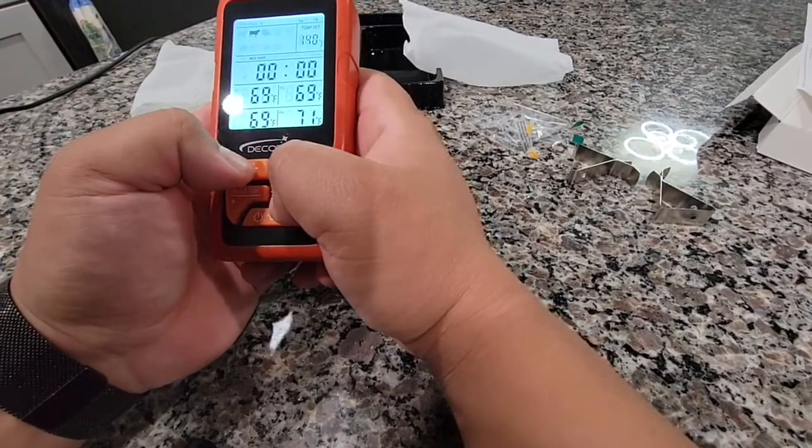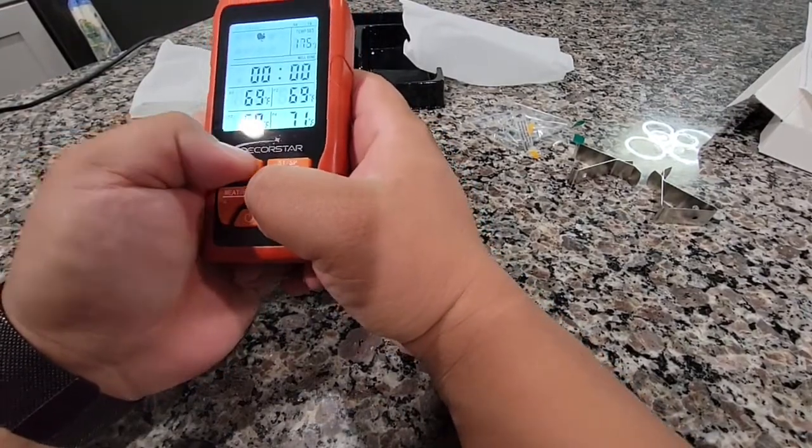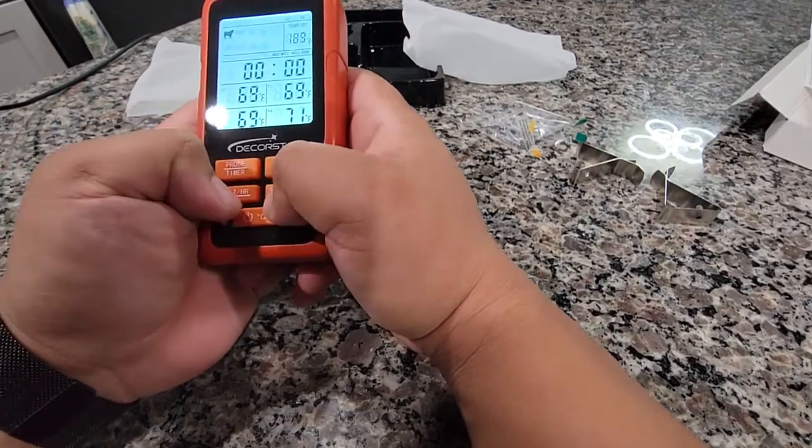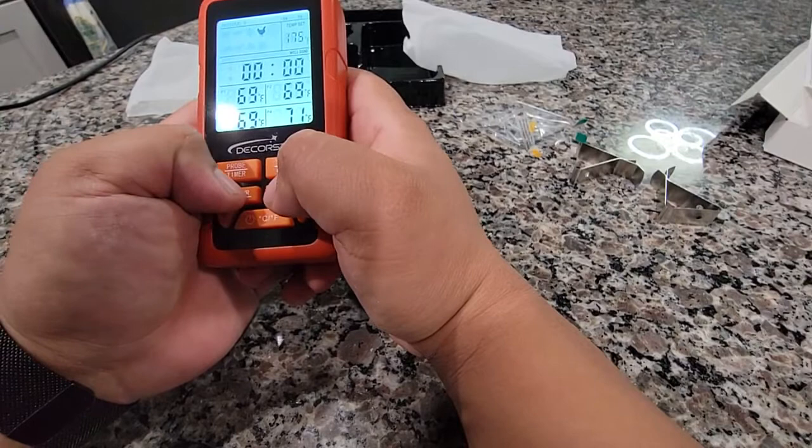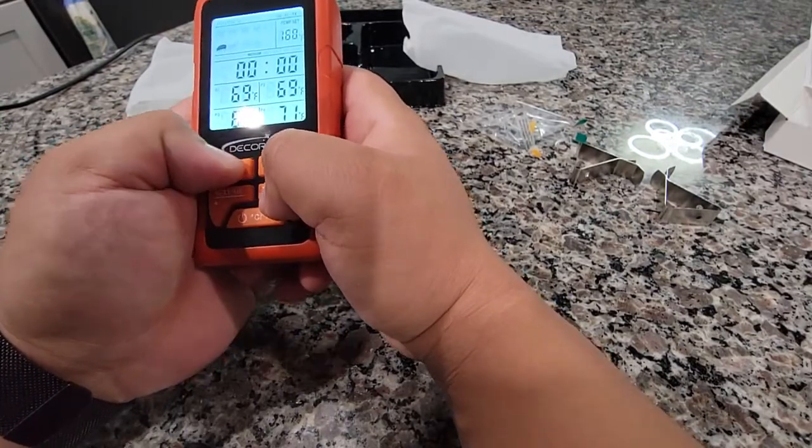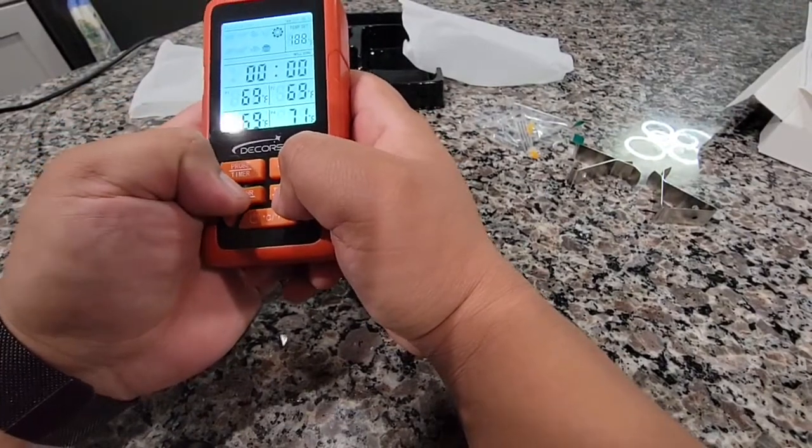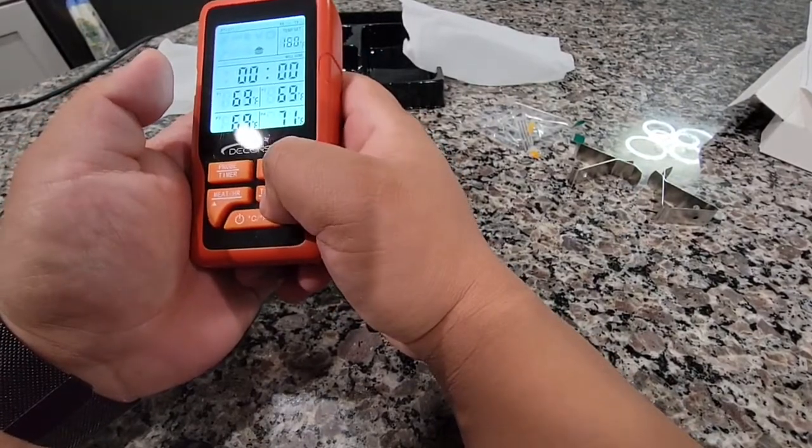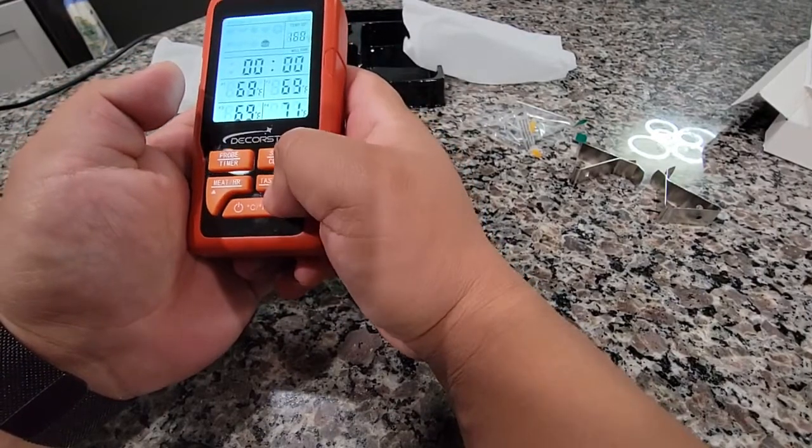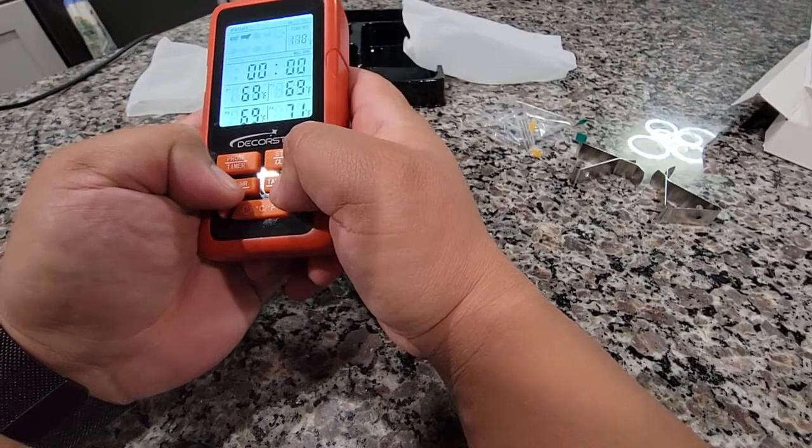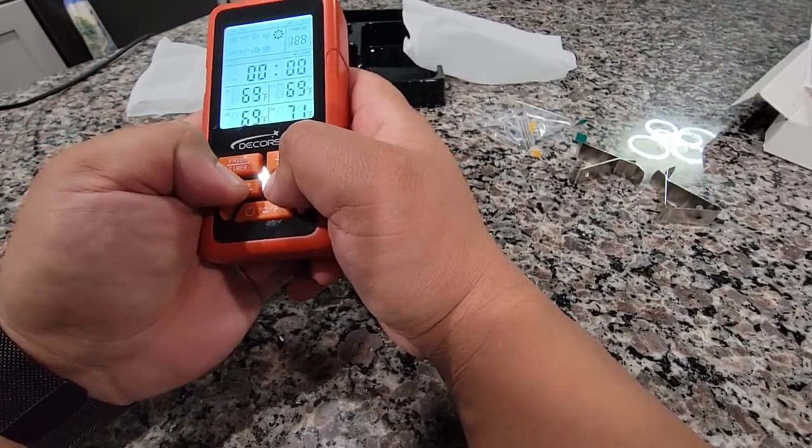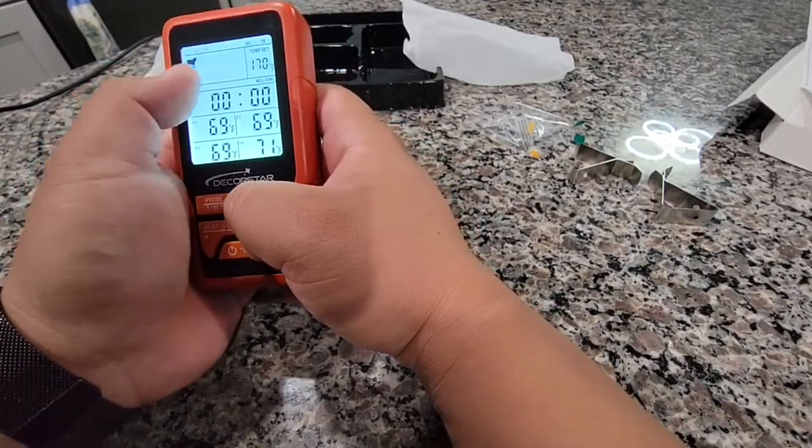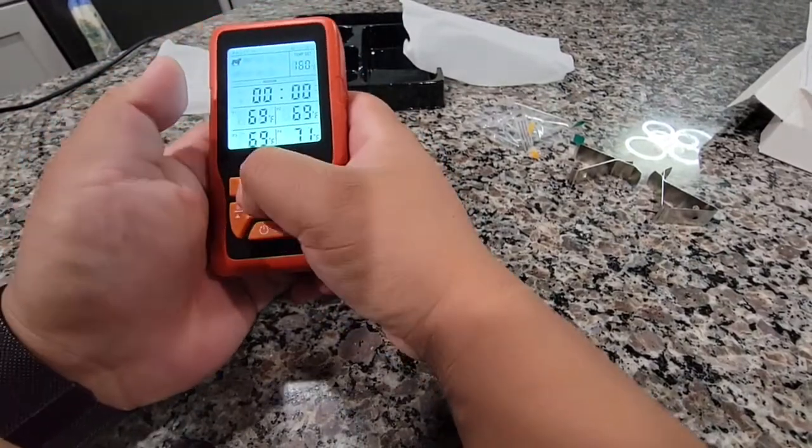So probe one, you can set it as a turkey. Probe two, set it as a fish. Probe three, that could be a pig, and we want this one medium. And then probe four, we'll do that as a burger. Let's see. I guess it doesn't tell us what our burgers can be, so we'll just do like cow and we'll just do medium. And then you set them up or set a timer.